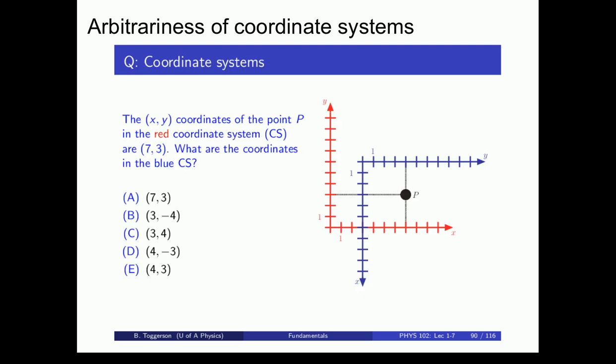As an example of the arbitrariness of coordinate systems, let's consider this problem from slide number 90 of the Fundamentals Unit. The XY coordinates of point P in the red coordinate system are given. The question is, what are the coordinates in the blue coordinate system?